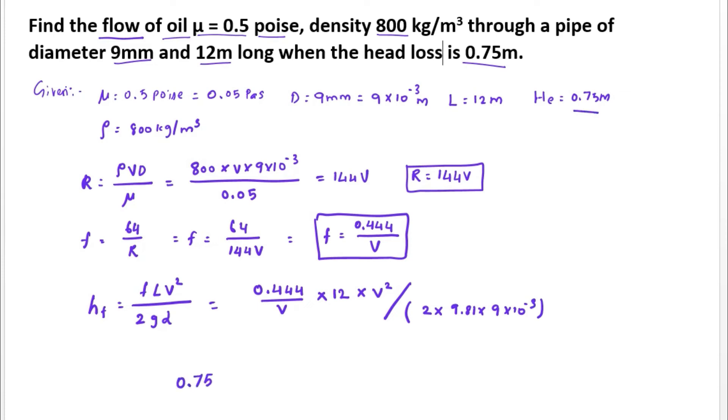Now 0.75 equals the expression and V square will be cancelled. Solving 0.444 into 12 into V divided by 9.81 into 9 into 10 power minus 3, we got the value of V equal to 0.0248 meter per second.